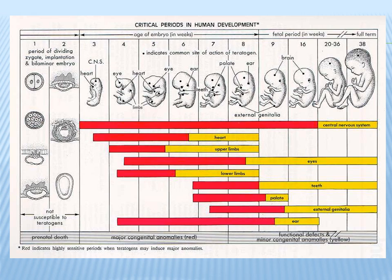During the pre-embryonic stage, the ovum is not susceptible to teratogens. It's not going to be malformed regardless of whether you've been a drug user, a smoker, or a heavy drinker. You have about a two-week window where it's not susceptible to malformations. Then in the embryonic stage, the majority of major congenital anomalies occur in response to teratogens or congenital defects. In the fetal phase, the last nine weeks to birth, functional defects and minor congenital defects occur.